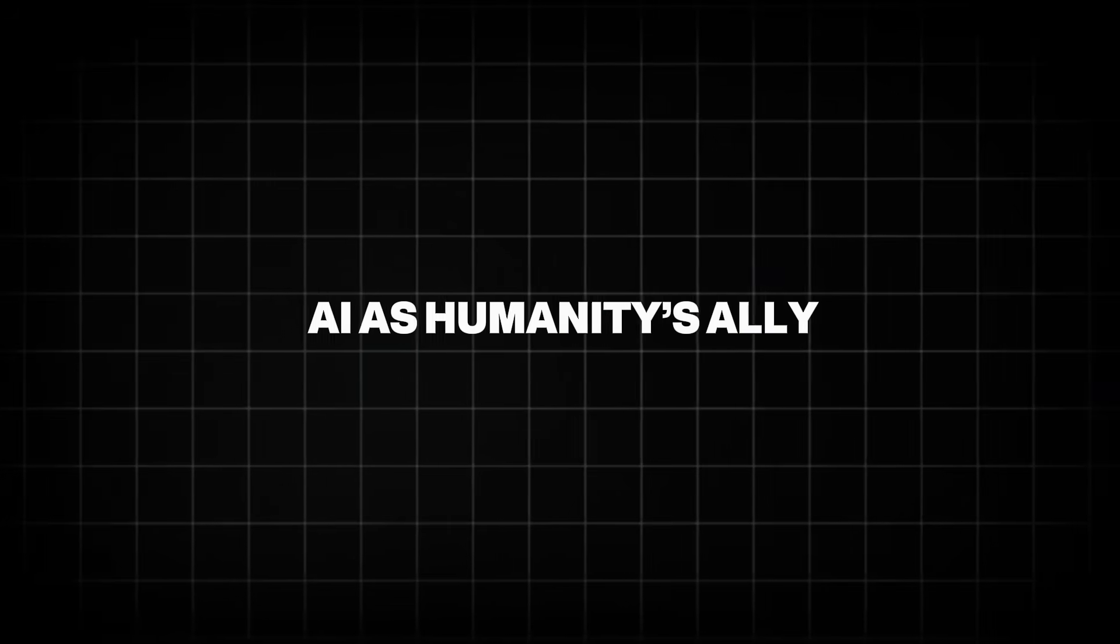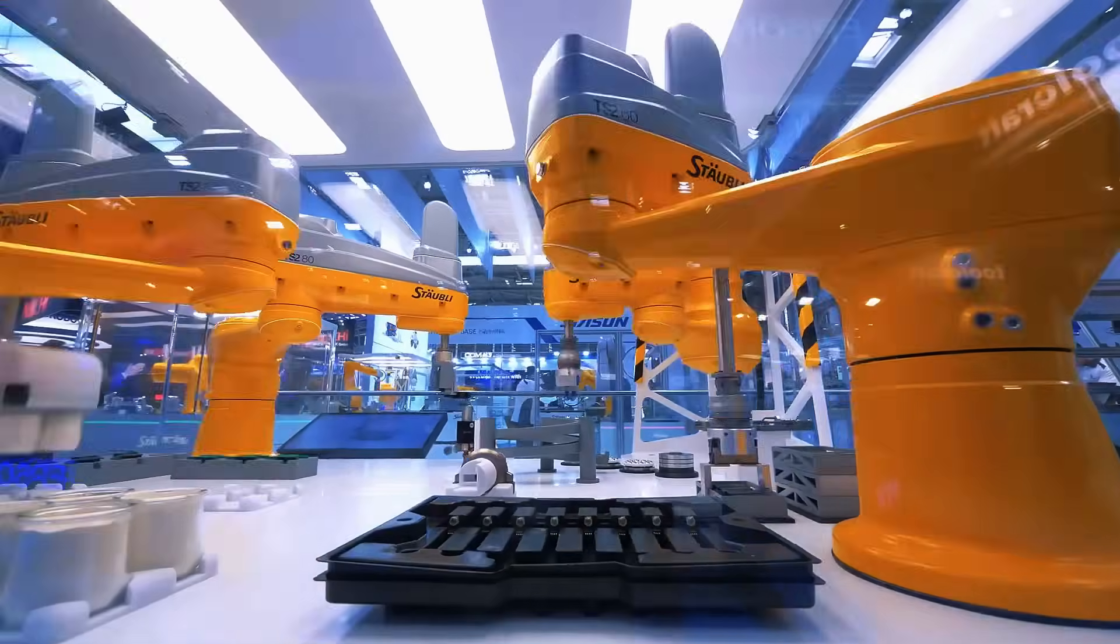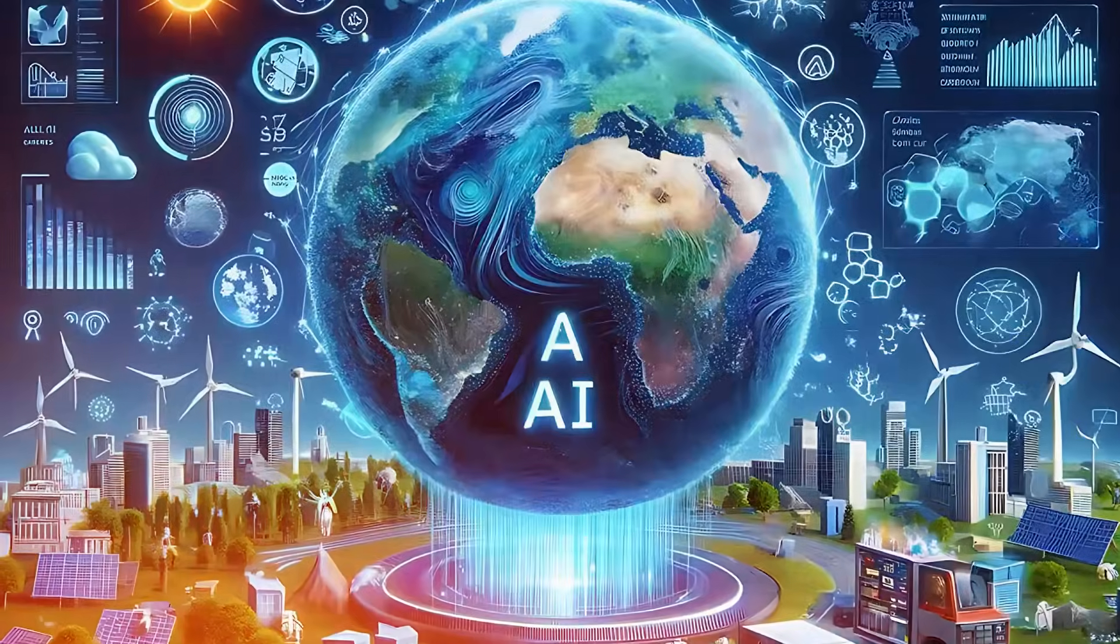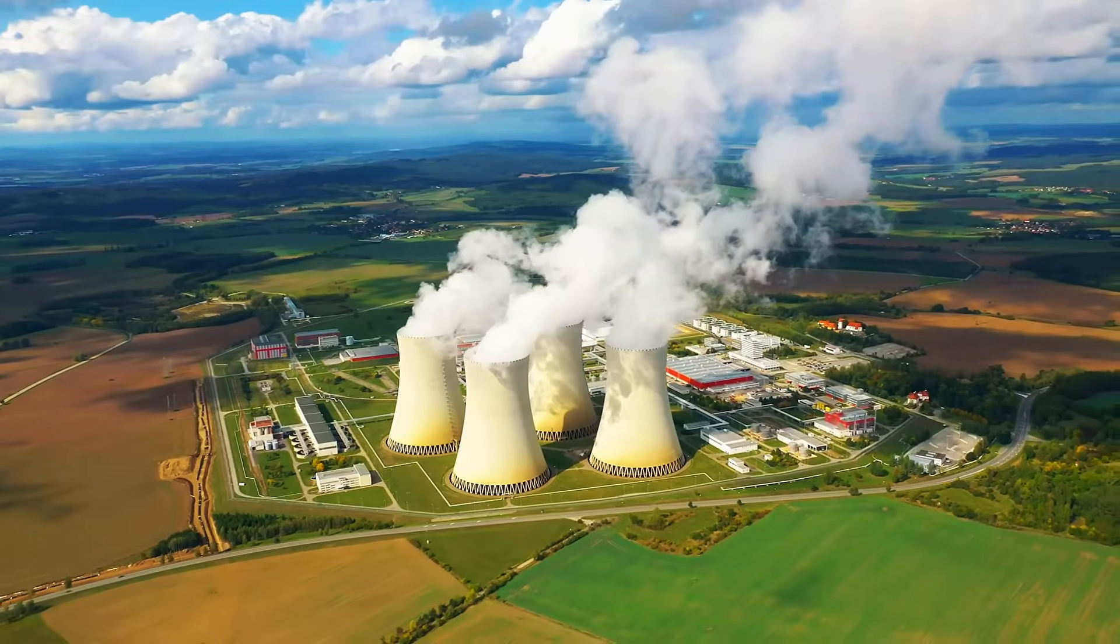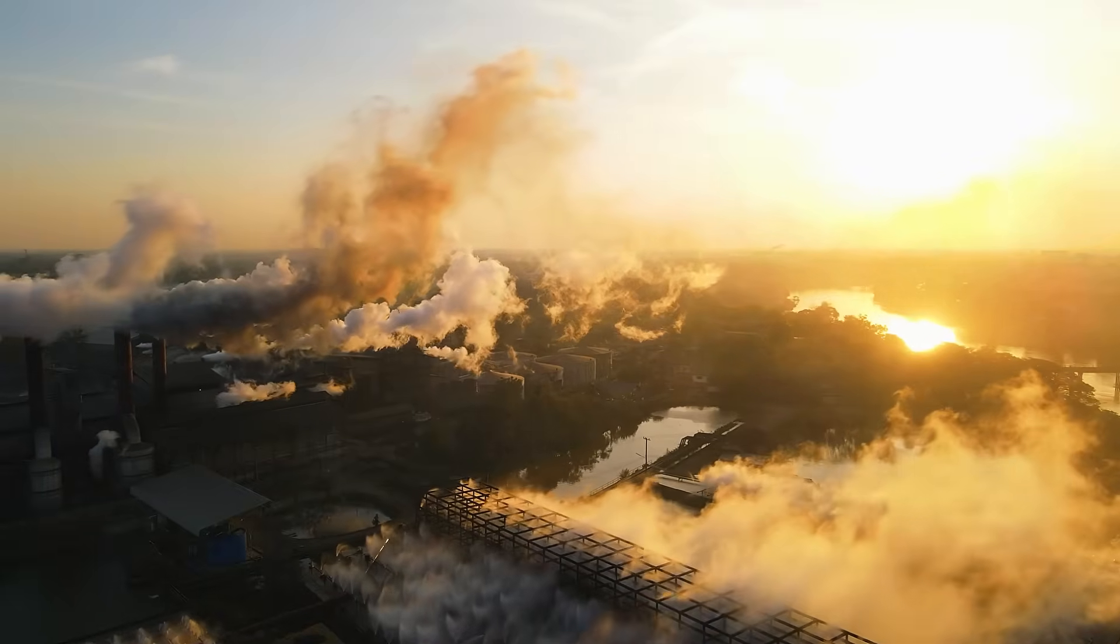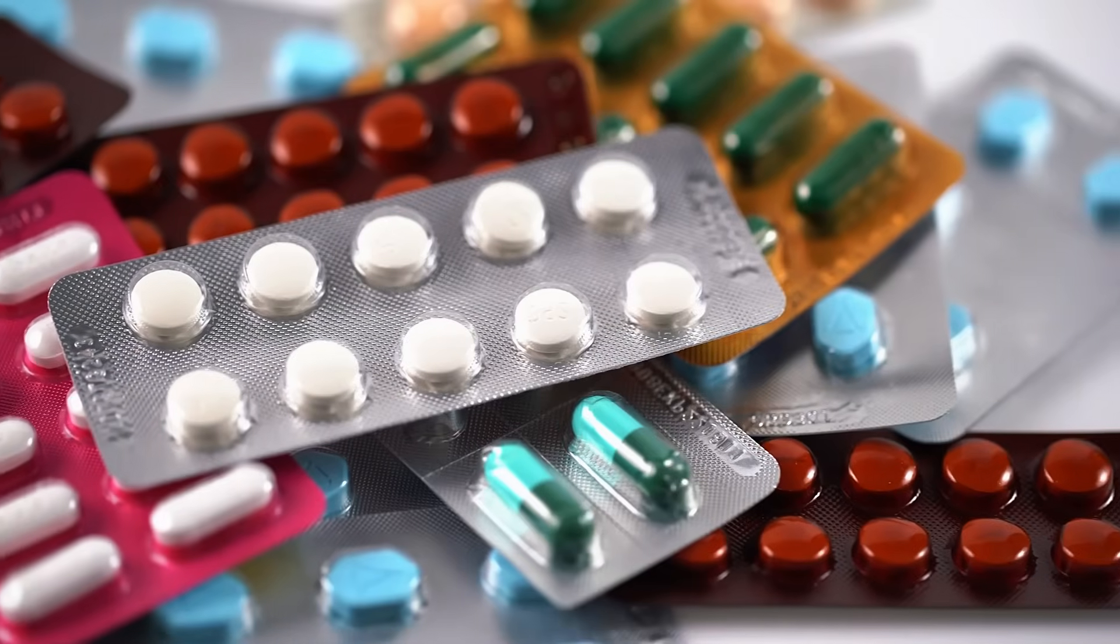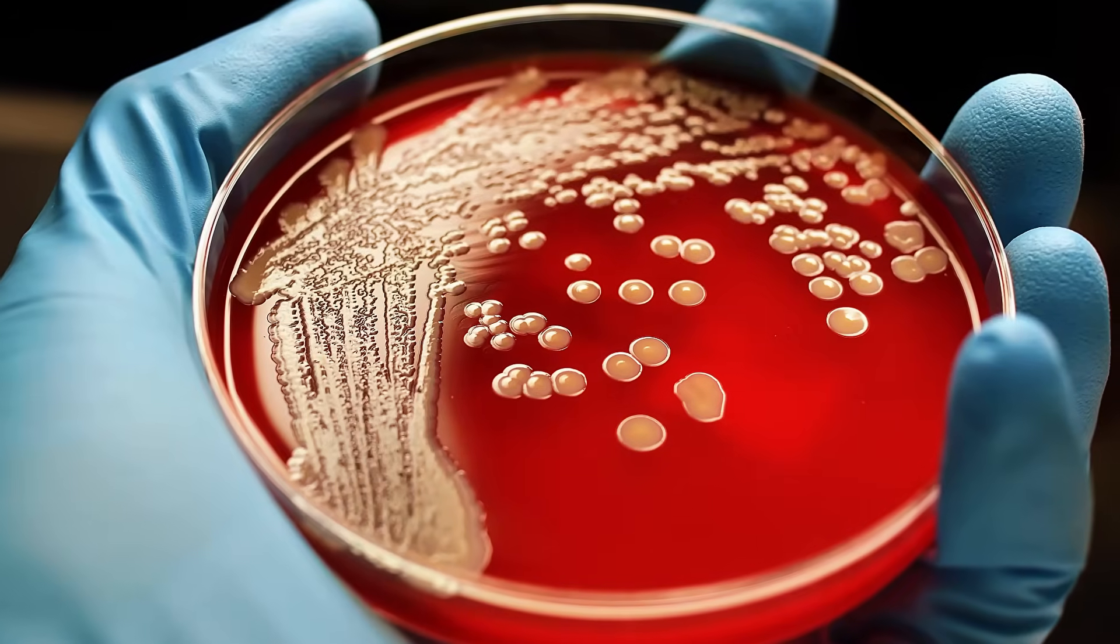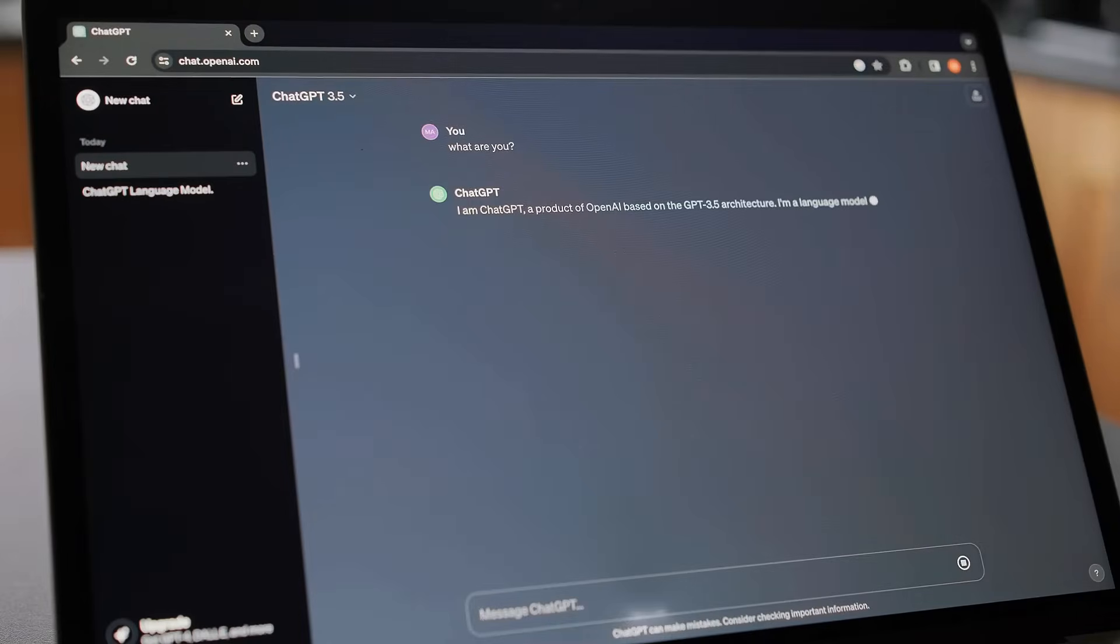AI as humanity's ally. On the flip side, AI's defenders argue it's a force for good, solving problems humans can't. Climate models powered by AI have improved carbon emission predictions by 40%, per a 2024 Nature study, guiding policy to mitigate global warming. AI-driven drug discovery slashed development time for a new antibiotic by 50%, saving millions from superbug infections, according to a 2023 MIT report. These breakthroughs suggest AI could be humanity's greatest ally, if we can harness it.